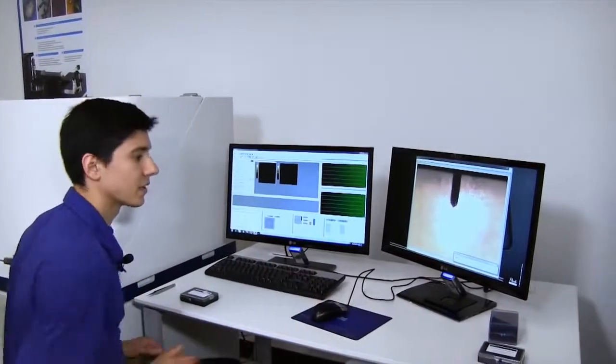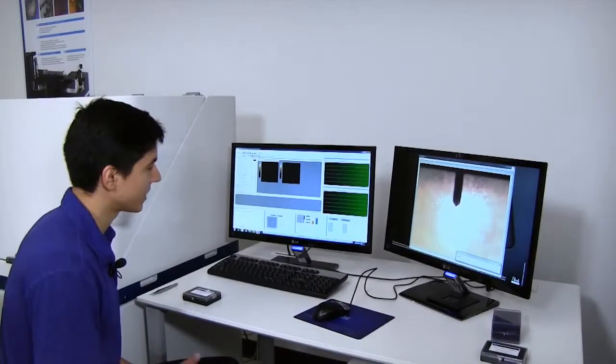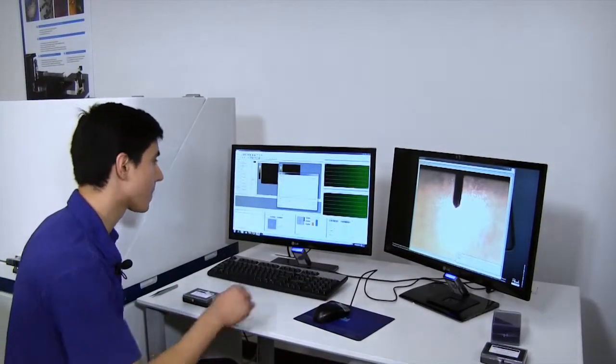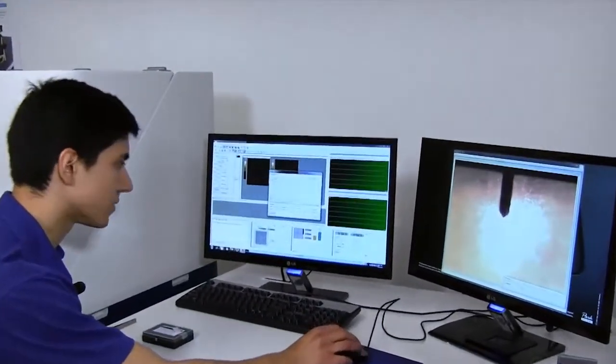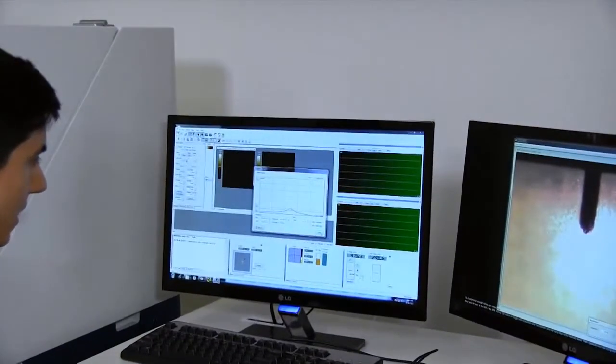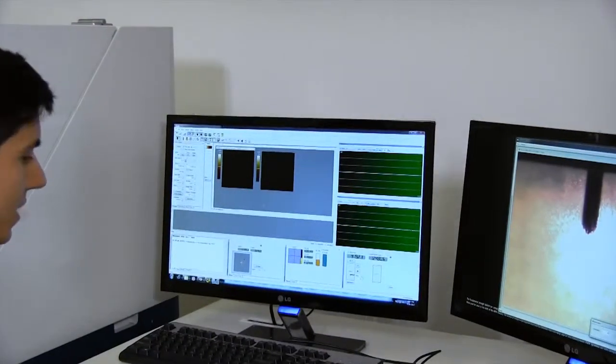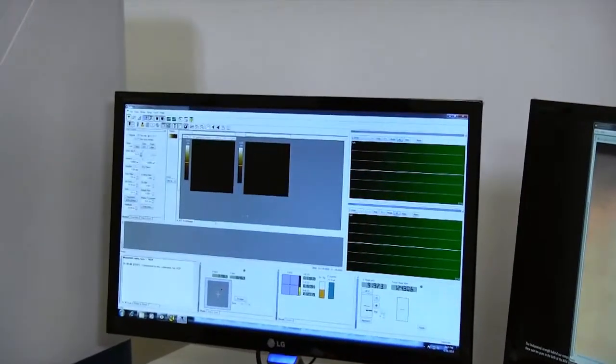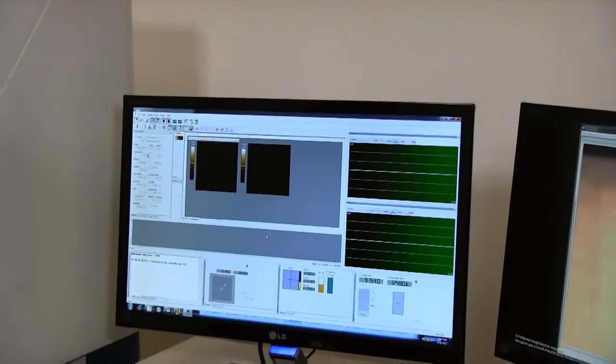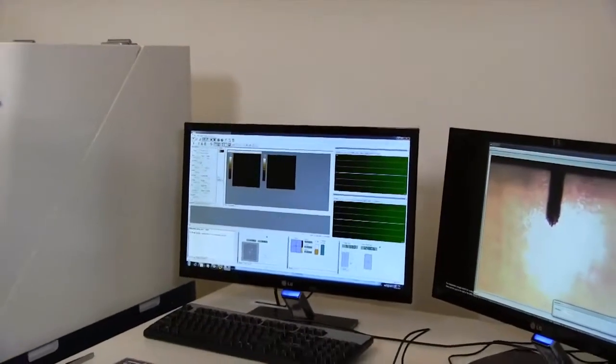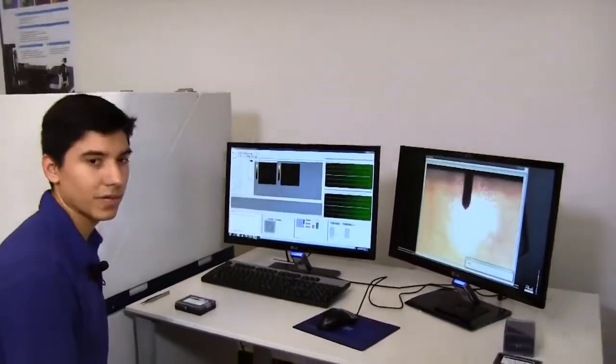First I want to configure the AFM to take a measurement with the particular probe that's in there right now. That involves just clicking a button and then accepting all the choices that have been made automatically by the AFM. And now I can click the approach button to tell the AFM to actually bring the sample very close to the surface so that it's sensing the surface of the sample we're going to be measuring.